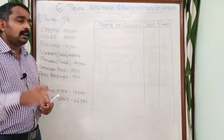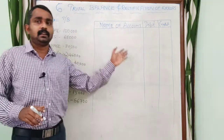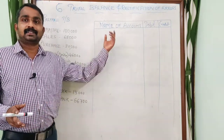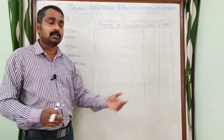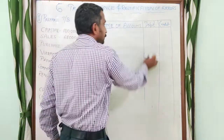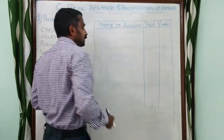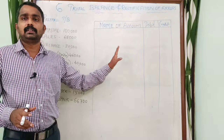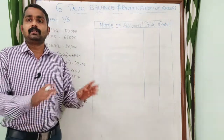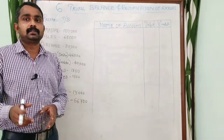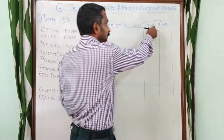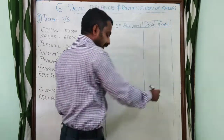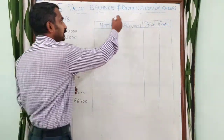In our previous class we also discussed the format of trial balance. A trial balance is a statement which consists of three columns: the first one is the name of account, the second one is debit, and the third one is credit. In some textbooks you can see one more column — that is the LF column — but that is not compulsory. Three columns are compulsory to prepare a trial balance.